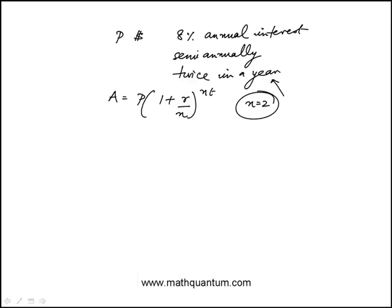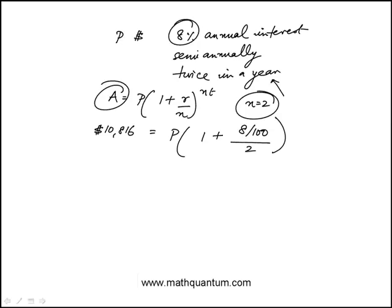The total value after one year is $10,816, and the question is, what was the value of P? The interest rate is 8%, so this would be 8 over 100 divided by 2, and then 2 times 1 because it's just one year.